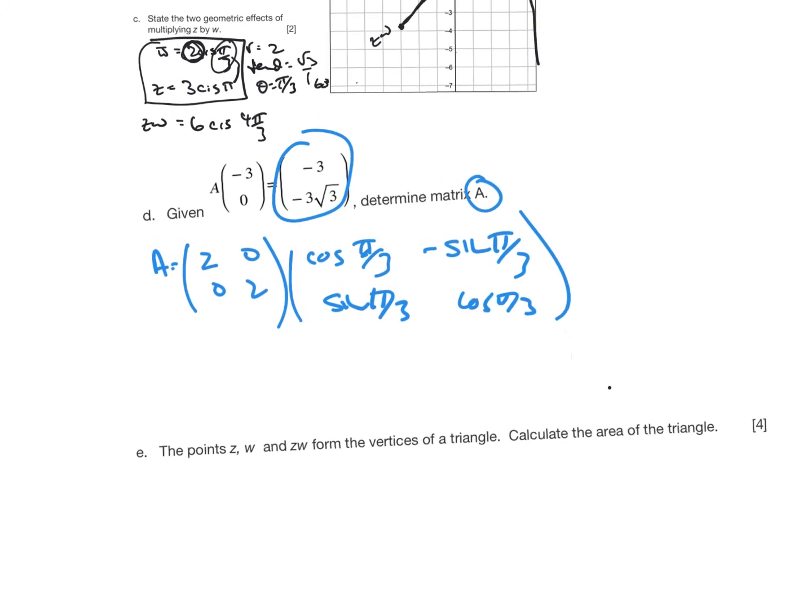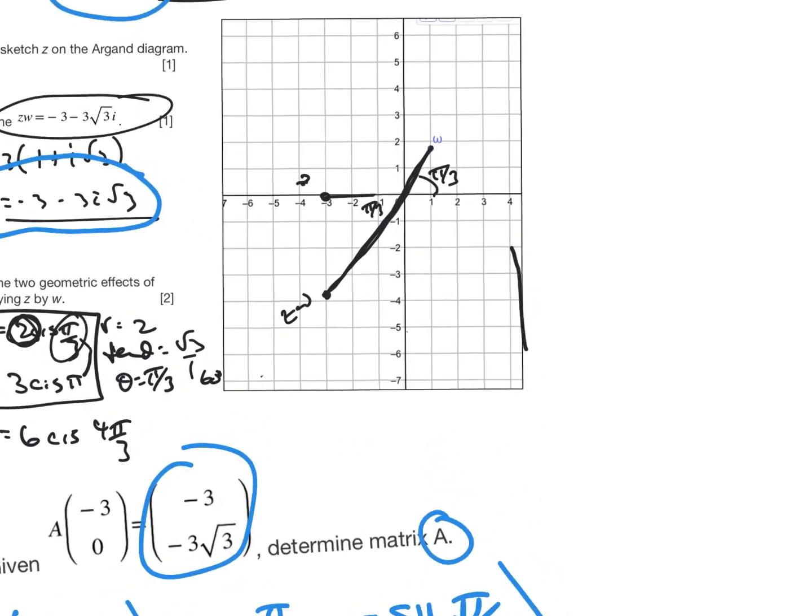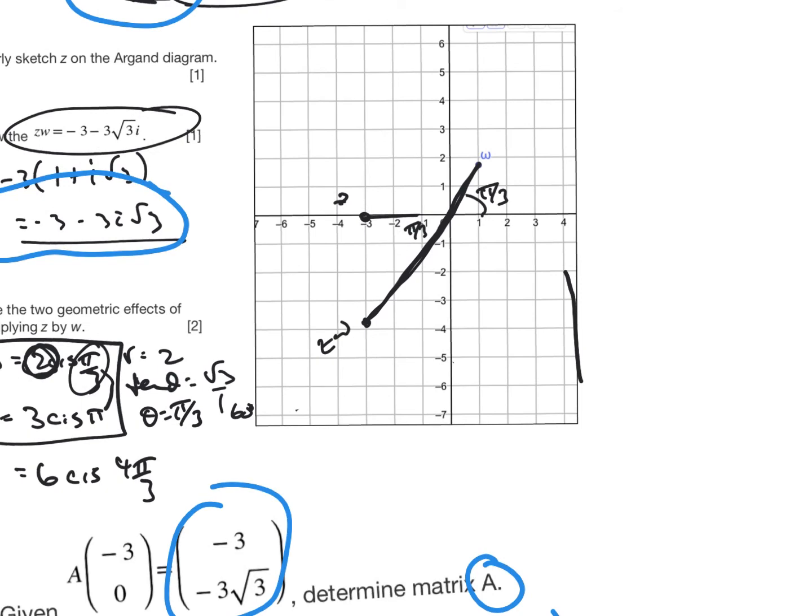And then finally, we're told that zw and z form vertices of a triangle, calculate the area. Well, this one actually made me pause and think again. What I have to recognize is that this here is a straight line because it's pi by 3 and it's pi by 3. And here, this one is also straight down.